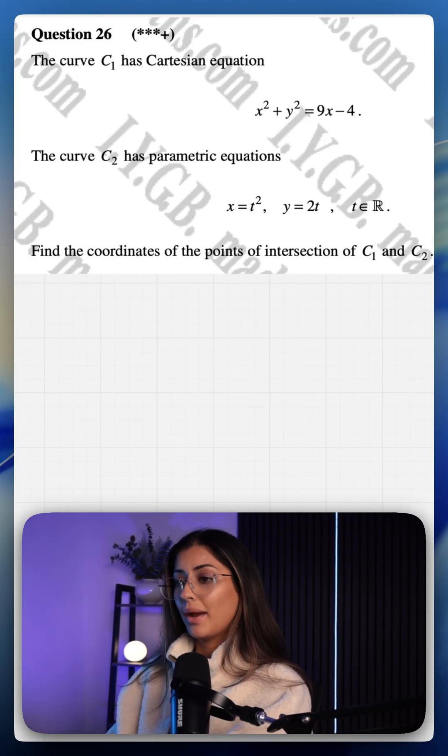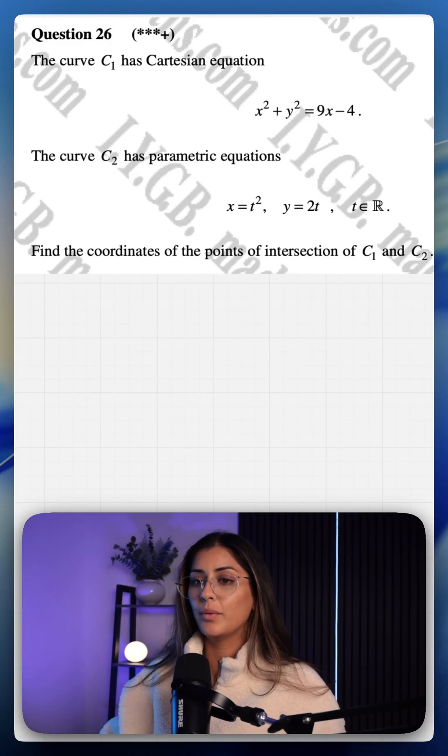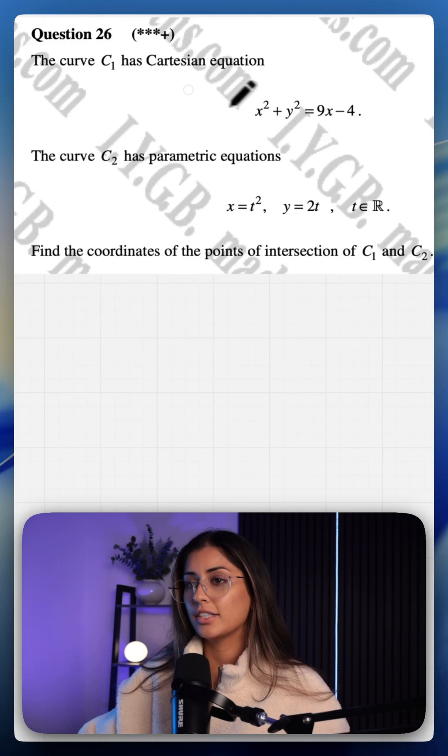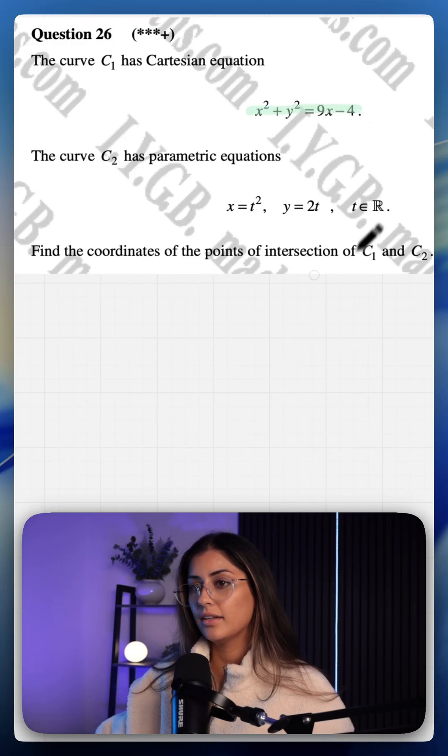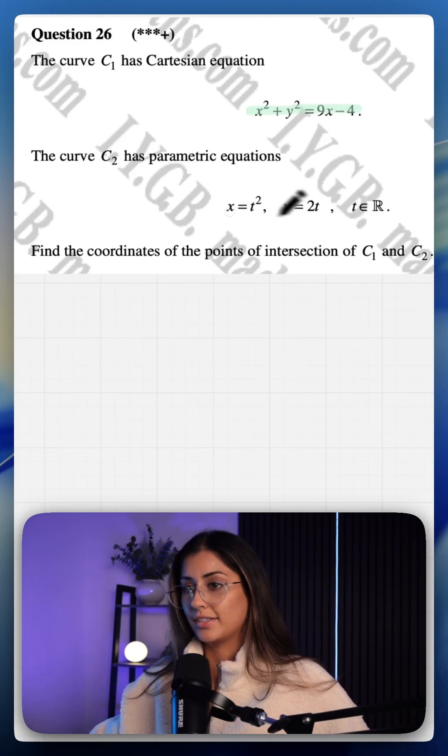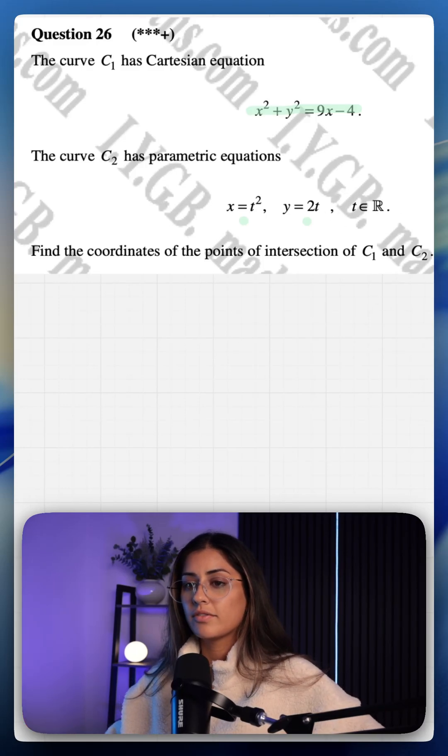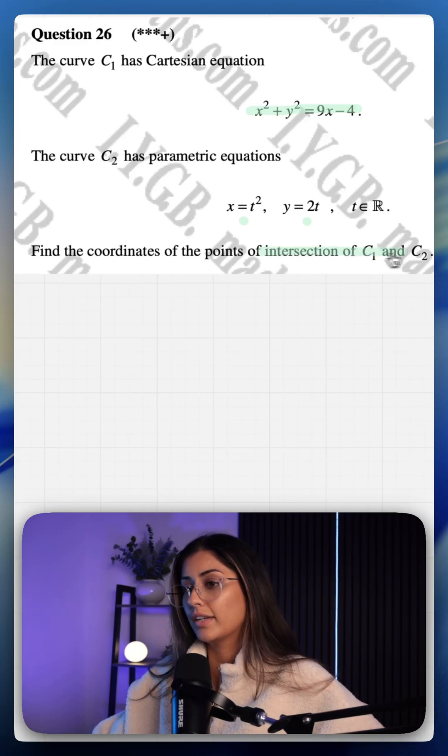This is a Madass Maths question on parametric and Cartesian equations. We have been told that the Cartesian equation C₁ is this here and the parametric equation C₂ consists of these two equations and we want to find the coordinates of the points of intersection.